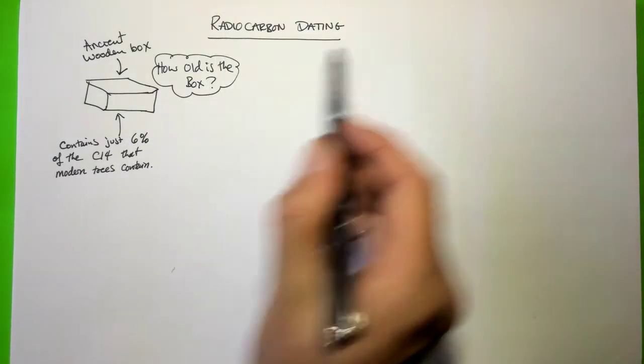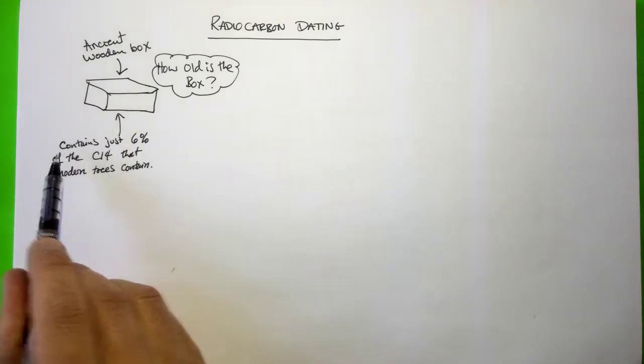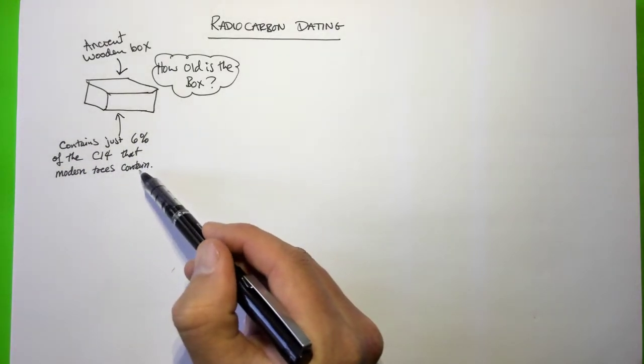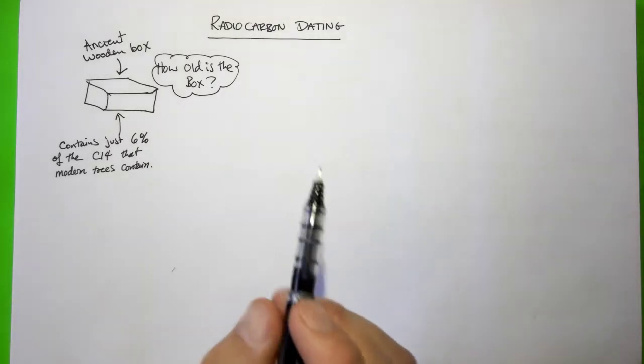So we're going to use the principle of radiocarbon dating. The information we're given in this question says that just 6% of the carbon-14 that modern trees contain is present in the wood from which this box is made.